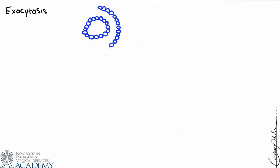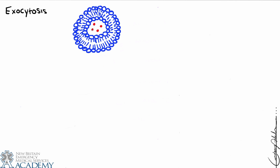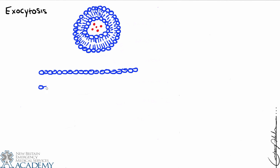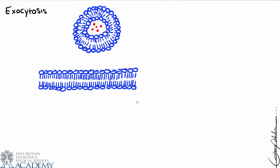Now let's consider exocytosis. We have our vesicle already made, and it wants to fuse with the membrane and release its contents outside of the cell. We draw the vesicle approaching the membrane. The snare proteins associated with the vesicle are called V-snare, meaning vesicle snare proteins. And we also have T-snare — T for target — which are target snare proteins present on the cell membrane.